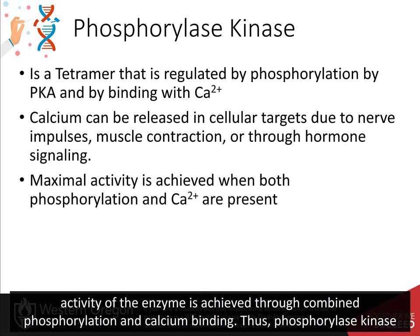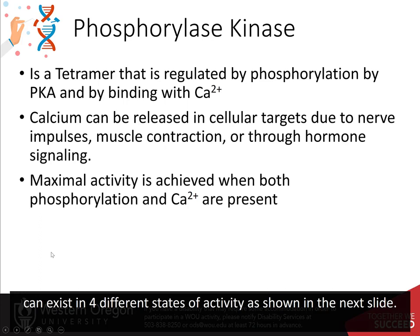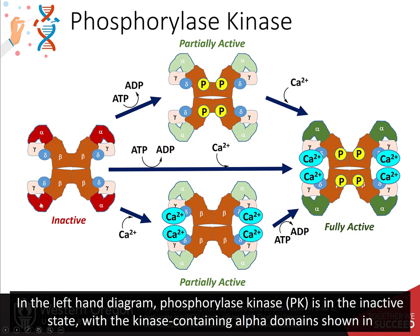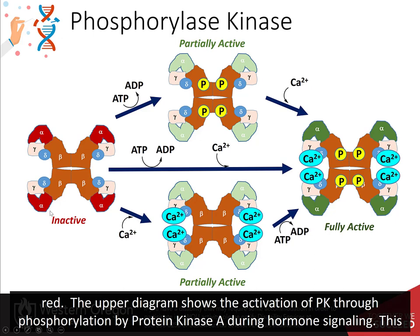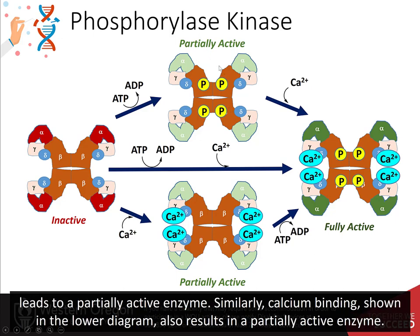Maximal activity of the enzyme is achieved through combined phosphorylation and calcium binding. Thus, phosphorylase kinase can exist in four different states of activity. In the left-hand diagram, phosphorylase kinase is in the inactive state with the kinase containing the alpha domains shown in red. The upper diagram shows activation through phosphorylation by protein kinase A during hormone signaling, leading to a partially active enzyme. Similarly, calcium binding, shown in the lower diagram, also results in a partially active enzyme.